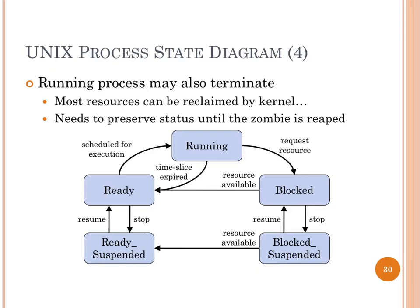To summarize: one process runs per CPU. Others that could run but don't have a CPU are in the 'ready' state. On a timer tick, the kernel moves a running process back to ready, and a scheduler picks the next ready process to run. A running process that makes a blocking system call becomes blocked; when the resource becomes available, it goes from blocked back to ready, eventually getting back on a CPU. If we stop a process, it moves into suspended-ready or suspended-blocked. From running, a process can eventually transition to terminated. Not every OS has exactly this state diagram, and not every OS has suspended states — Unix has those for a specific historical reason.